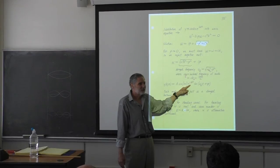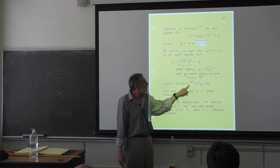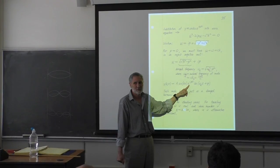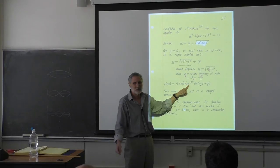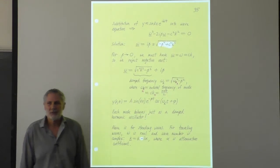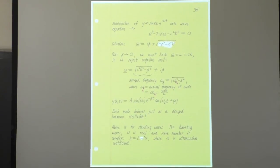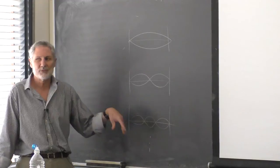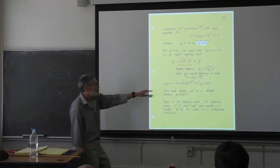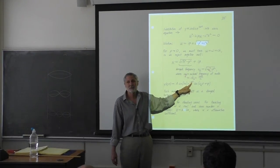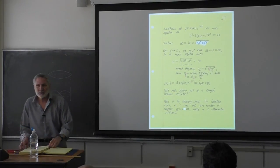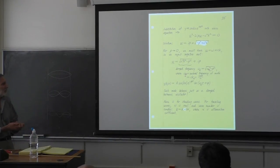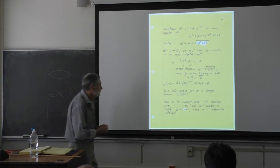What we found is not surprising: each of these standing waves for a fixed-fixed string acts like a damped simple harmonic oscillator. We have all these modes, and each one acts like an oscillator whose frequency is modified a very small amount by the damping, but more importantly, whose amplitude decays. However, in our model all modes decay at the same rate — beta is just a constant. In reality, higher-frequency modes typically decay more quickly, so we'd have to make the model more realistic.